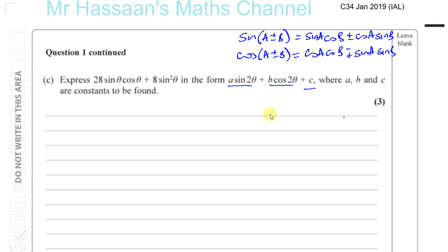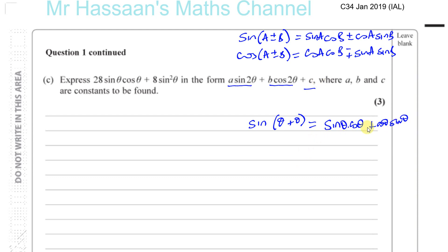For sin 2θ, you could think of it as sin(θ + θ). Using the addition formula, you get sin θ cos θ plus cos θ sin θ, which is 2 sin θ cos θ. So sin 2θ = 2 sin θ cos θ.